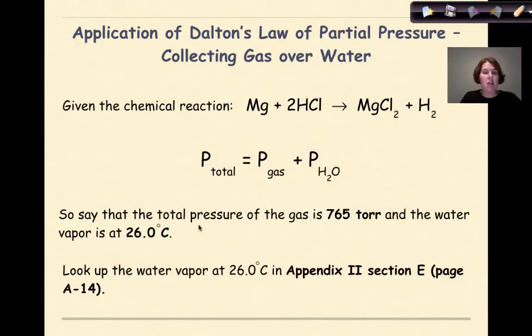So say that the total pressure of the gas inside the eudiometer is 765 torr, and the water vapor is at 26 degrees Celsius. What you would do is go to your textbook, and you'd go to Appendix 2, Section E, on page A-14, and you look up the water vapor at 26 degrees Celsius. And for the sake of time, I'm going to tell you that if we look that up, our pressure will be 25.21 torr. We're going to use that in our next example.